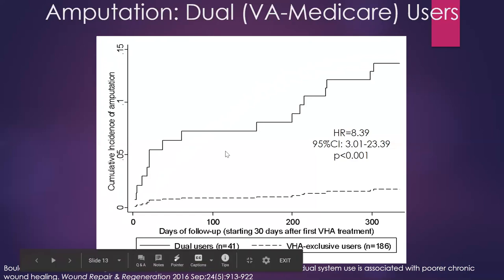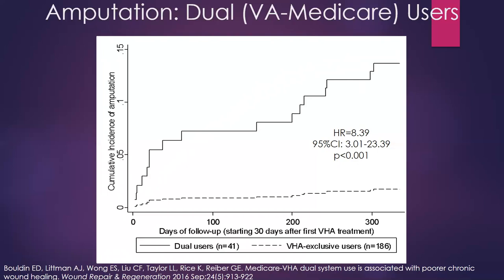This analysis looked at amputation risk — a very negative outcome associated with chronic wounds. It's uncommon: only about 2–3% of veterans using only VA care had an amputation at that wound site by end of year, but for dual users it was more like 12–13%. The hazard ratio summarizing the difference was 8.39, meaning at any time during follow-up, dual users were on average about eight times more likely to have an amputation than exclusive VA users, and that was statistically significant.